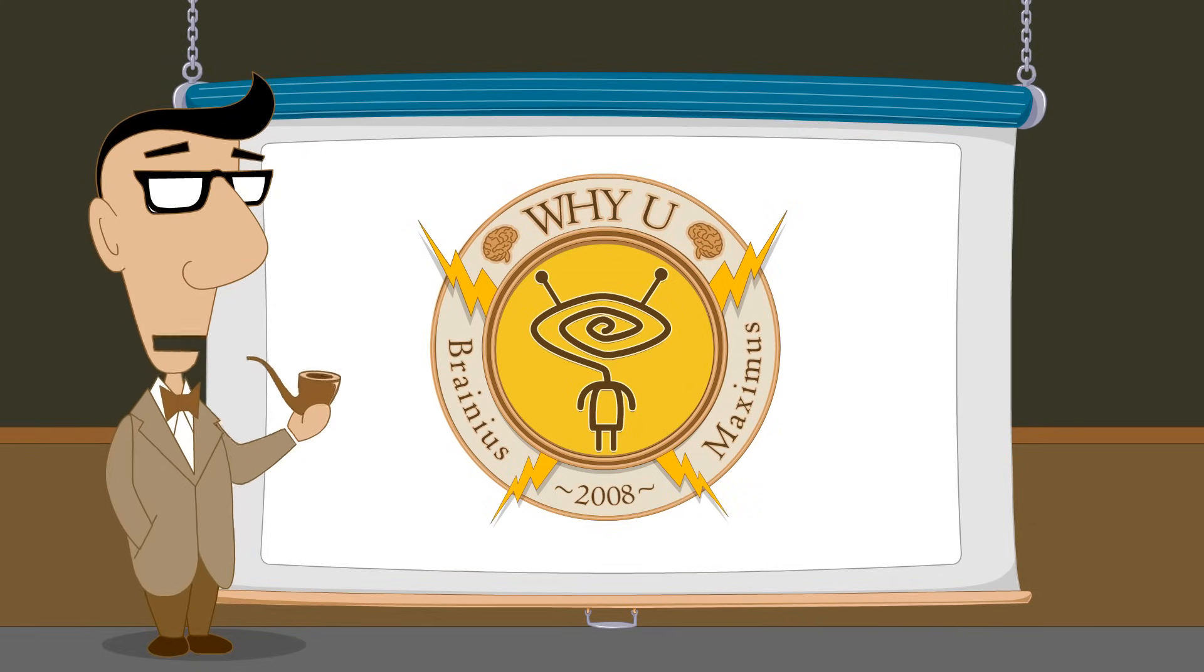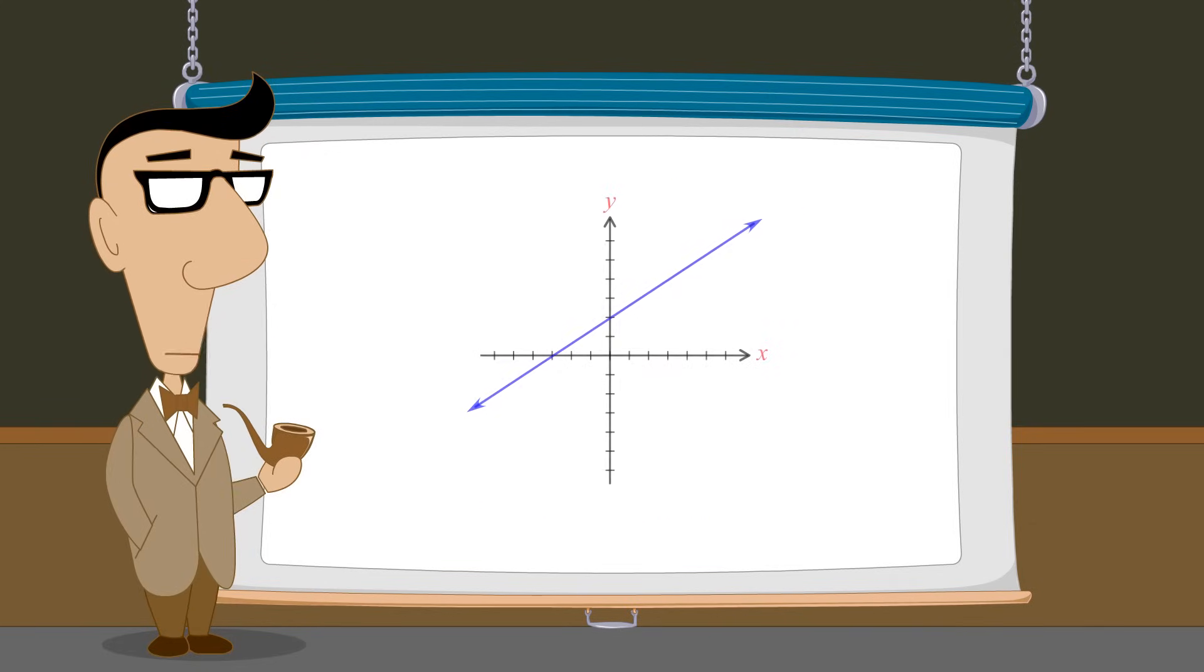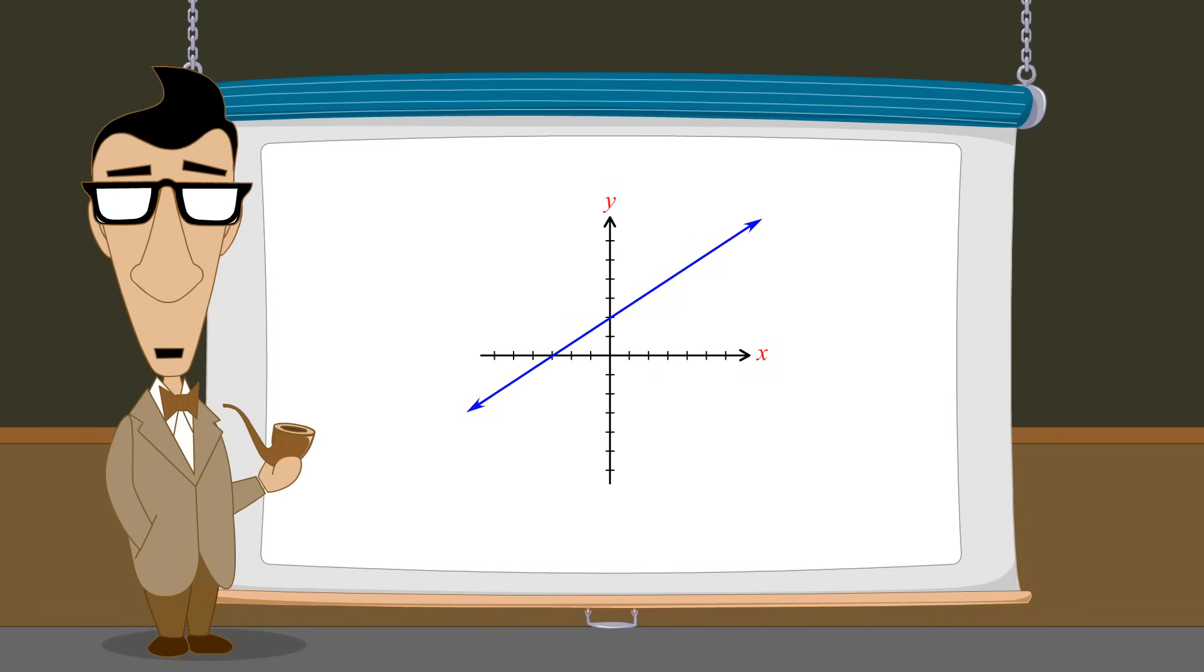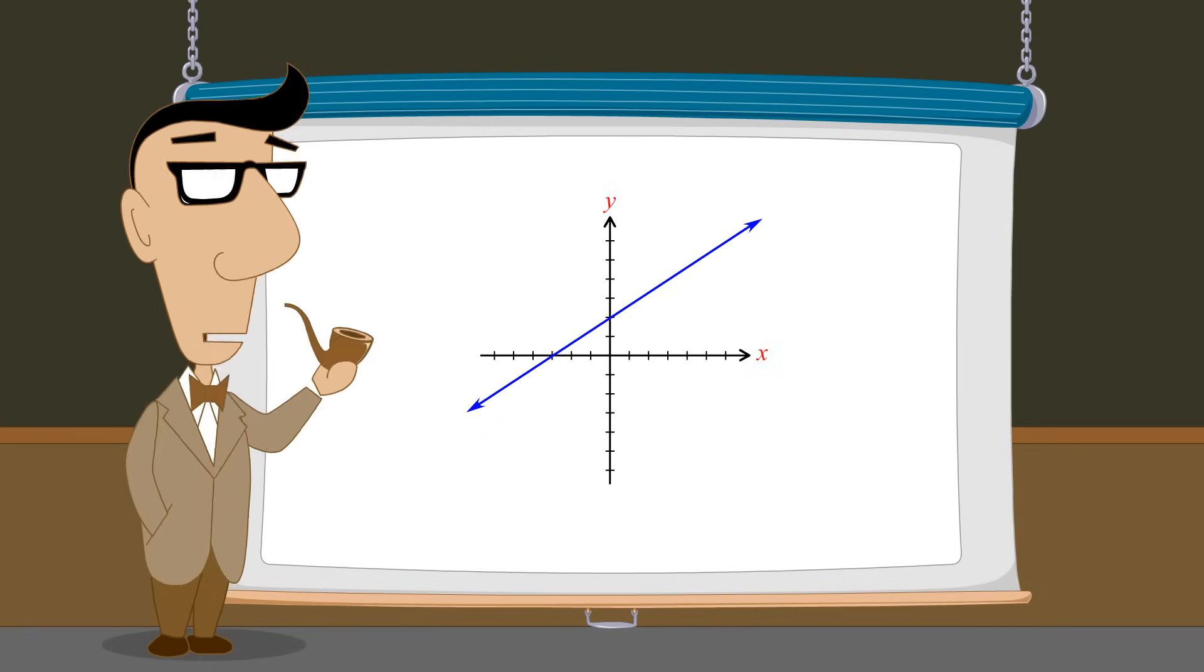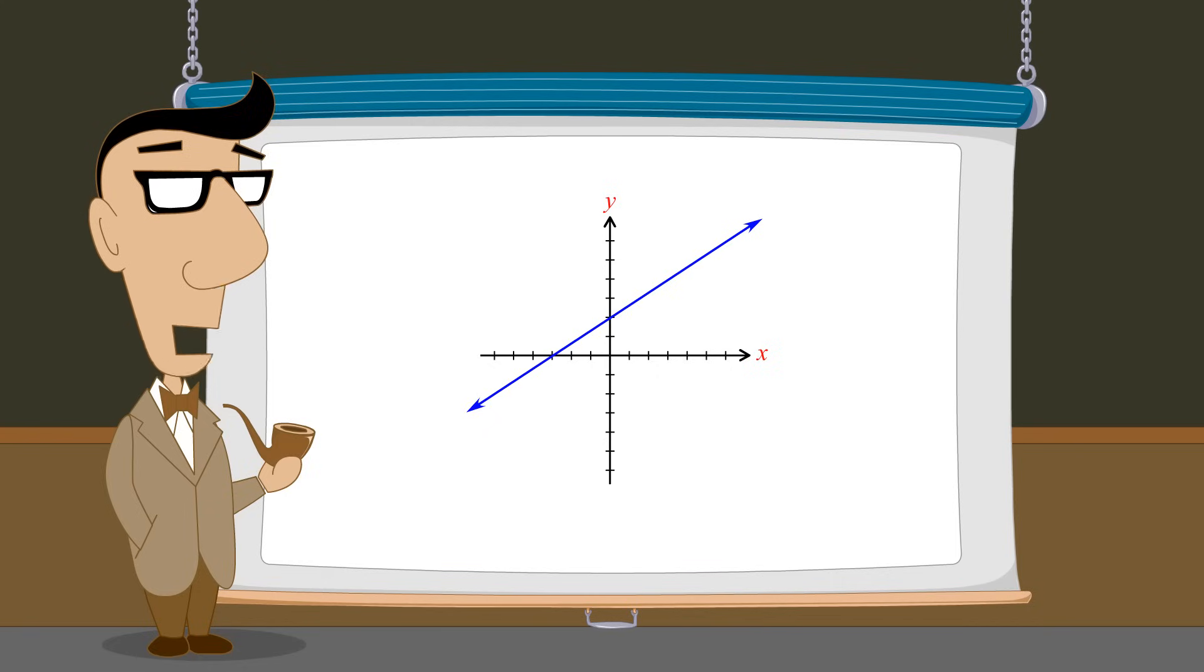So far, we have studied two different forms of linear equations which describe lines in the Cartesian plane. Either form may be more useful, depending upon what information is known about a line's graph. If we know the line's slope and y-intercept, then the slope-intercept form is the simplest way to write an equation which describes the line.